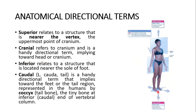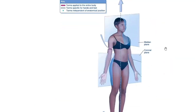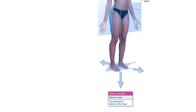Inferior relates to a structure that is located nearer to the sole of the foot. Caudal — from Latin carda, meaning tail — is a handy directional term that implies towards the feet or the tail region, represented in humans by the coccyx, the tiny tail bone at the inferior caudal end of the vertebral column. This is the lower caudal end, near the feet.